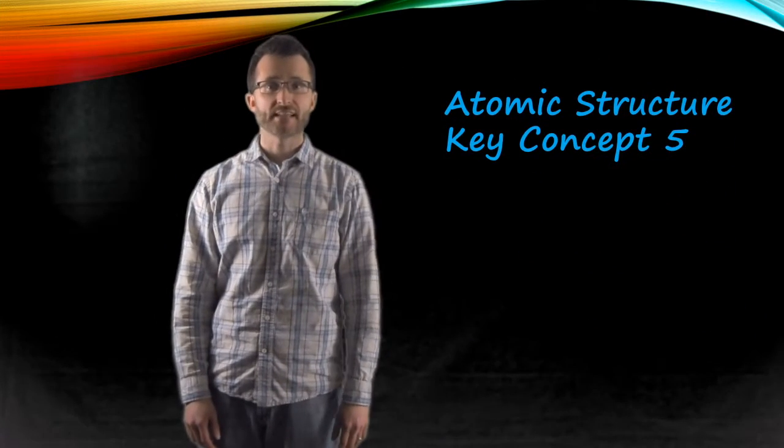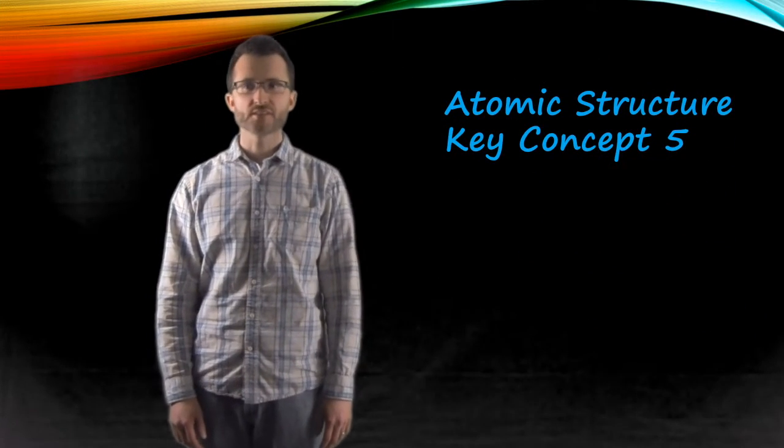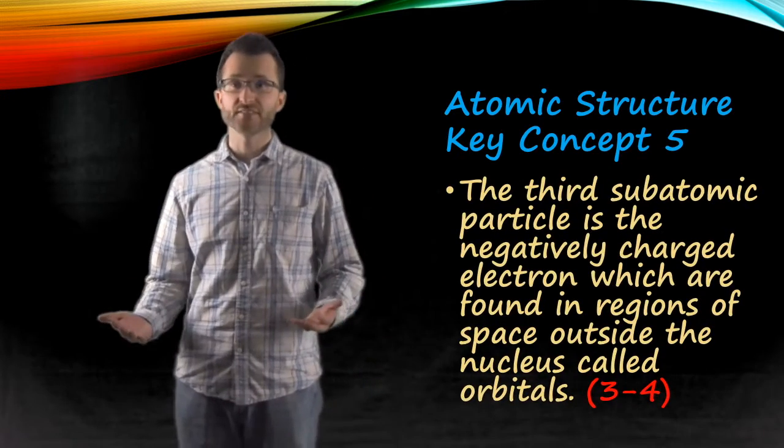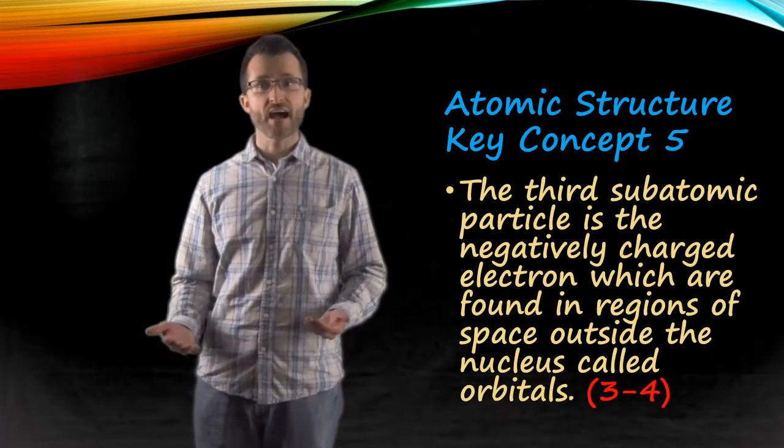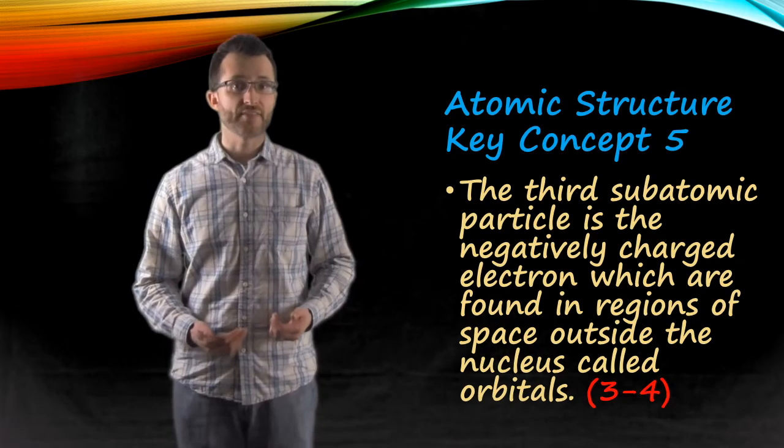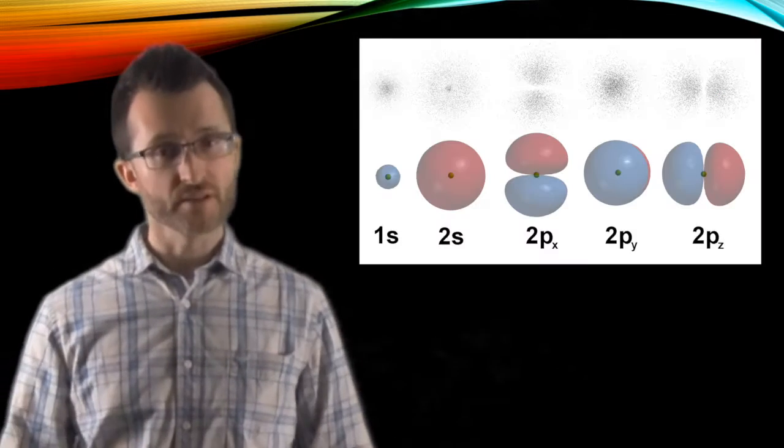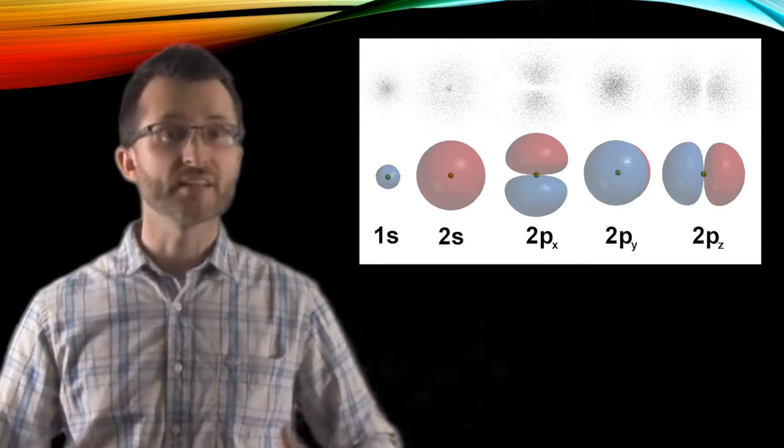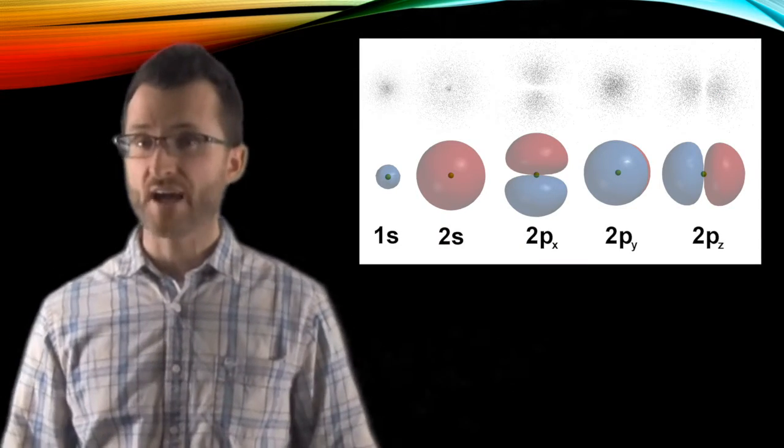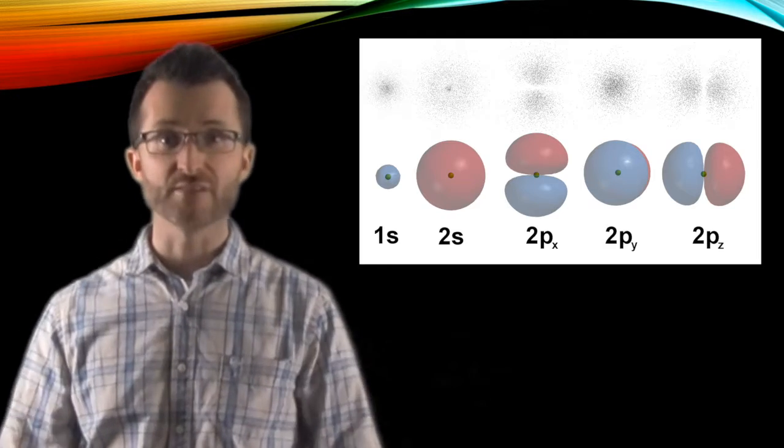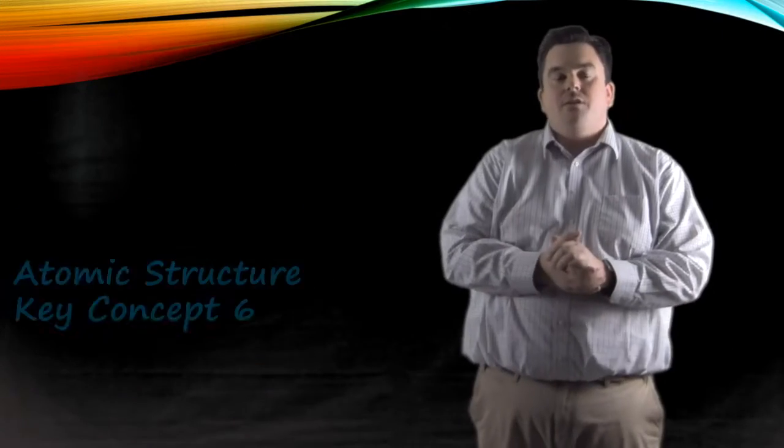Atomic structure, key concept five. The third subatomic particle is the negatively charged electron, which are found in regions of space outside the nucleus called orbitals. Now, the Regents really wants you to know the definition of an orbital, and an orbital is a region of space where the electron is most likely to be found. They look like clouds.